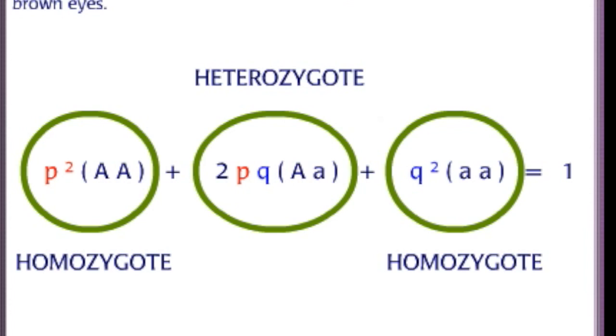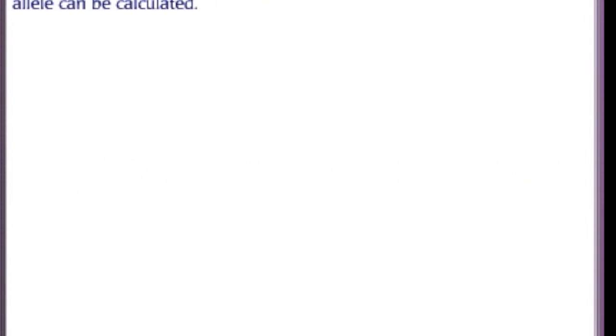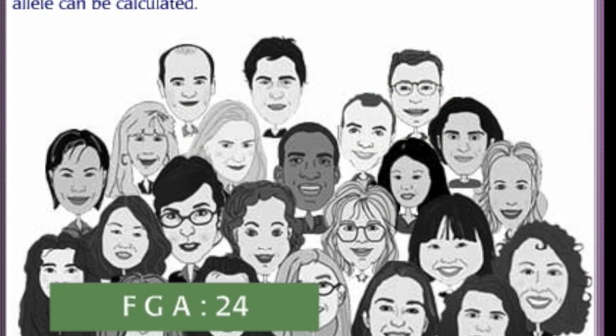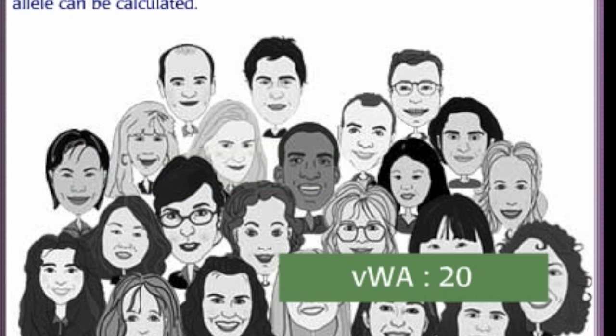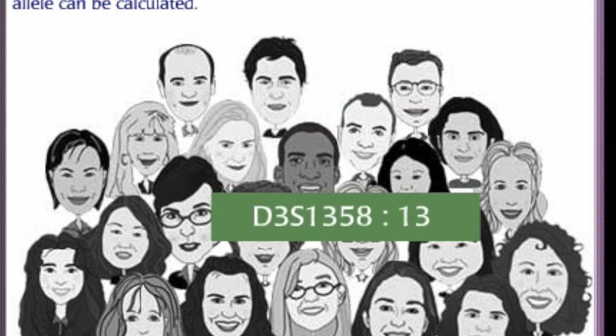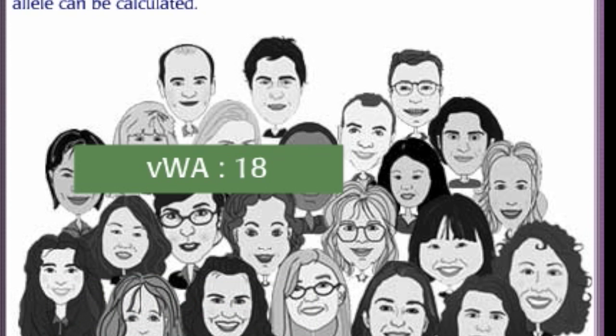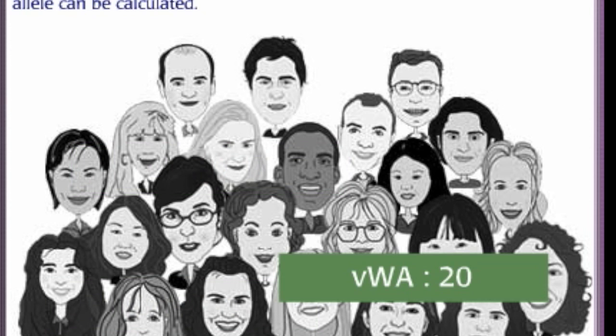To relate this back to the eye color example, aa determines blue eyes while AA and Aa determine brown eyes. How does all this relate to calculating the random match probability of a DNA profile? Just like the eye color alleles, STR alleles are at equilibrium in a population. If the frequencies of STR alleles in a population are known, then the probability of inheriting a particular STR combination or genotype can be calculated.